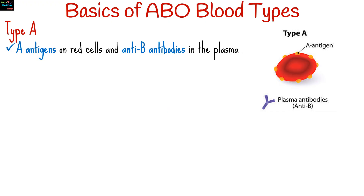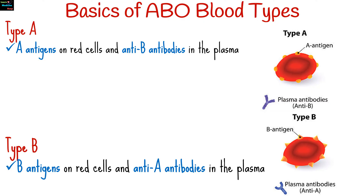There are four main blood groups. Type A has A antigens on red cells and anti-B antibodies in the plasma. Type B has B antigens on red cells and anti-A antibodies in the plasma.